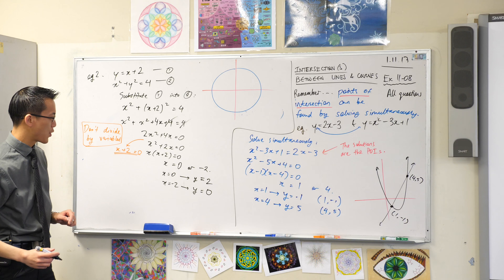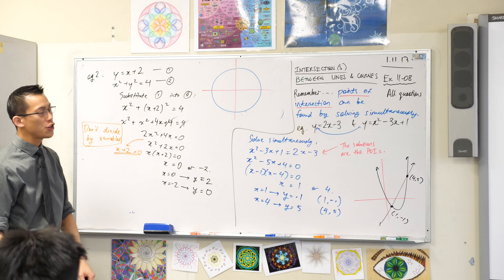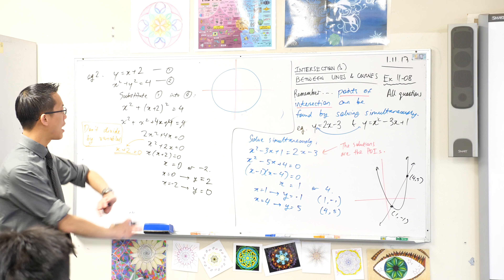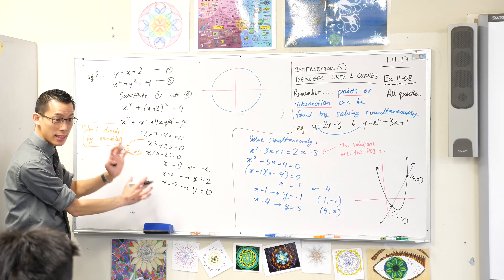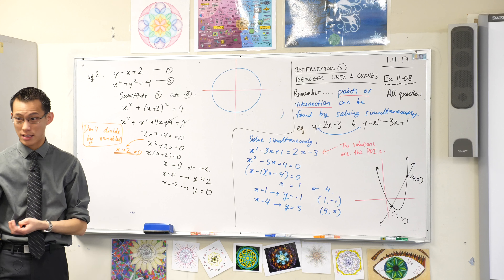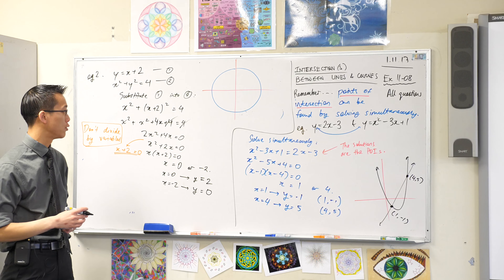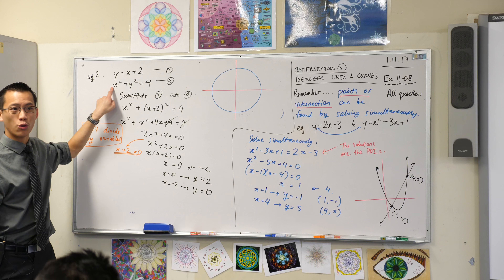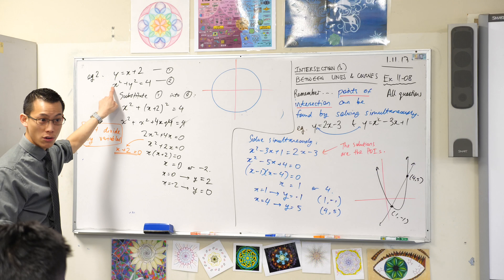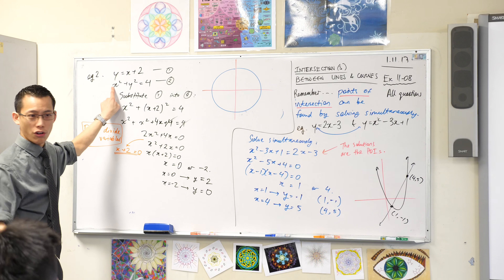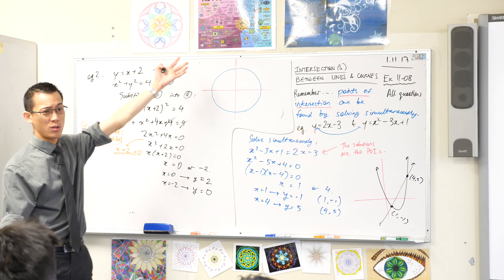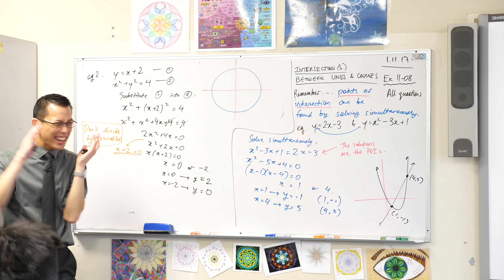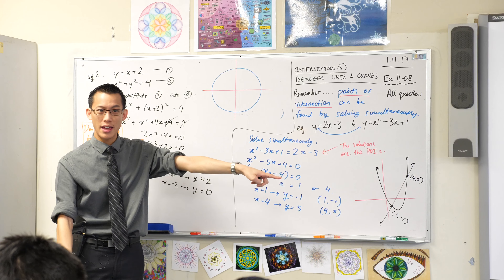So you've got some x values. Has anyone already gone and found the y values? Let me just jot them down. What was the first y value you got? When x is zero, y is going to be two. And by the same logic, when x is negative two, y is zero. Yes?